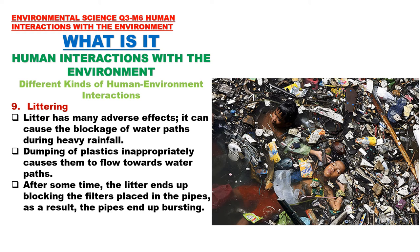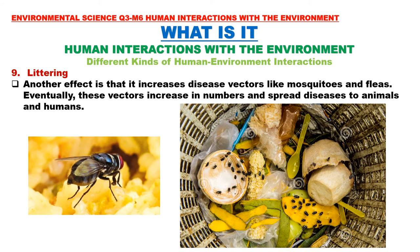Number 9: Littering. Litter has many adverse effects. It can cause blockage of water paths during heavy rainfall. Dumping plastics inappropriately causes them to flow towards water paths, eventually blocking filters placed in pipes, causing the pipes to burst. Littering is also a major reason why the Philippines experiences flooding, especially during the rainy season — garbage, especially plastic, are found in our drainage systems. Another effect of littering is that it increases disease vectors like mosquitoes and fleas, which spread diseases to animals and humans. It is very important that we know how to dispose of our waste properly, and at home, let us practice proper waste segregation.